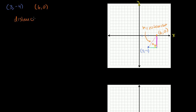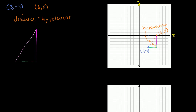The distance is equal to the hypotenuse of this right triangle. So if we could just figure out what the base length is and what this height is, we could use the Pythagorean theorem to figure out this long side — the side that is opposite the right angle, the hypotenuse. Let's call this d for distance. That's the length of our hypotenuse.